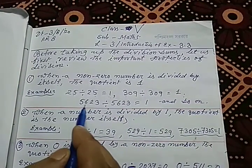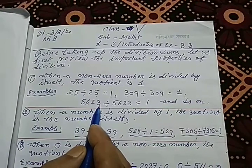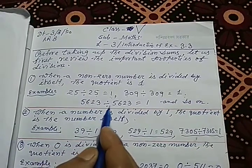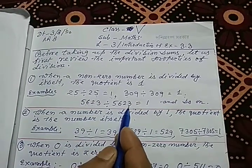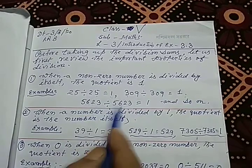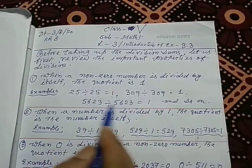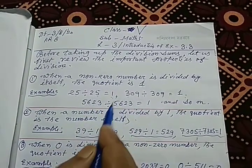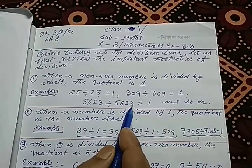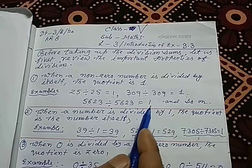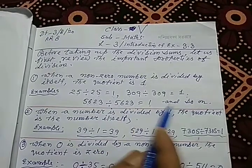If you divide 5,623 by 5,623 — that means the same number divided by the same number — you will get 1, and so on.